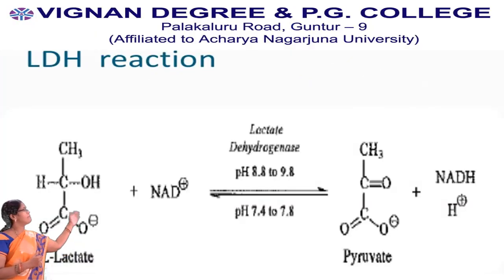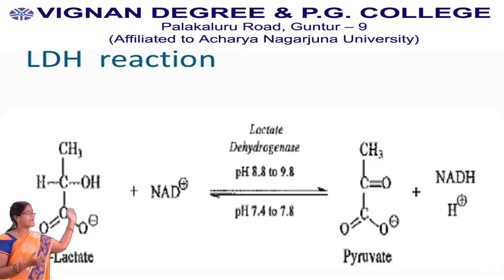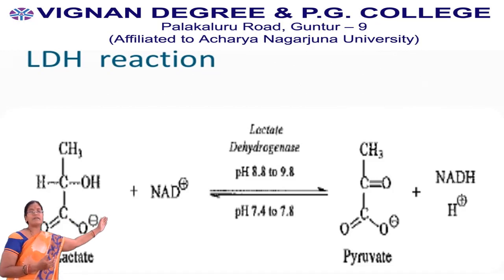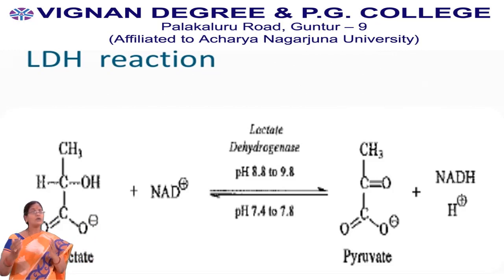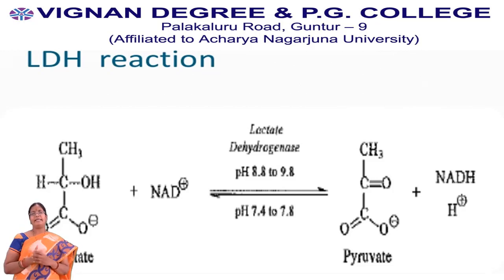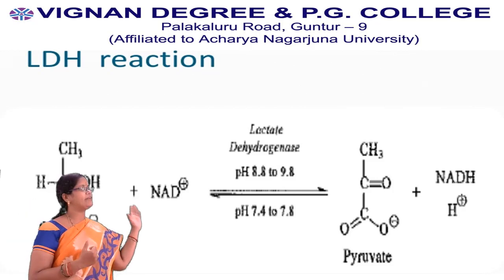The equation representing the function of lactate dehydrogenase: lactate dehydrogenase acts on lactate, and the hydrogen is accepted by NAD+, converting it to NADH. This is a reversible reaction. Conversion of lactate to pyruvate occurs at pH 8.2 to 9.8, whereas conversion of pyruvate to lactate, which is the reverse reaction, occurs at pH 7.4 to 7.8.